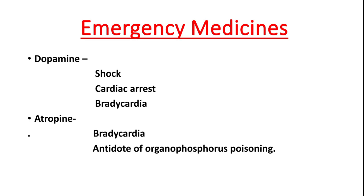Then atropine. The functional class of atropine is anti-dysrhythmic, anti-cholinergic, and anti-muscarinic. It is used in bradycardia and as an antidote for organophosphorus poisoning.